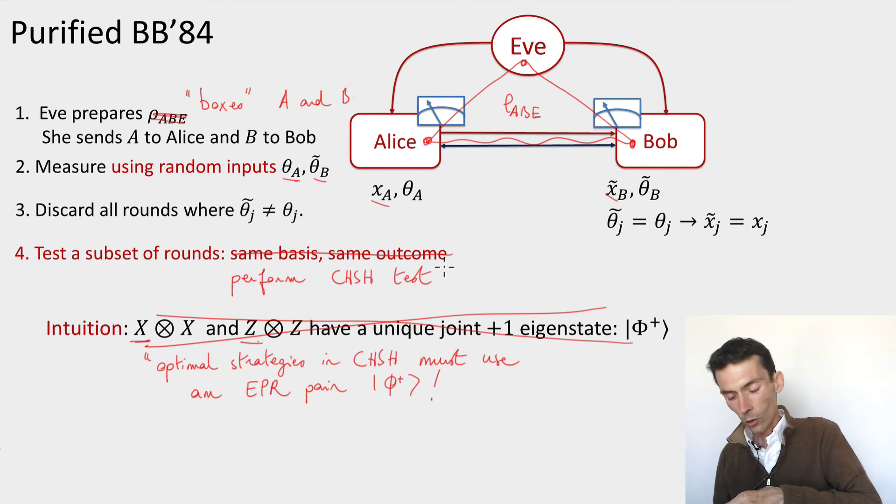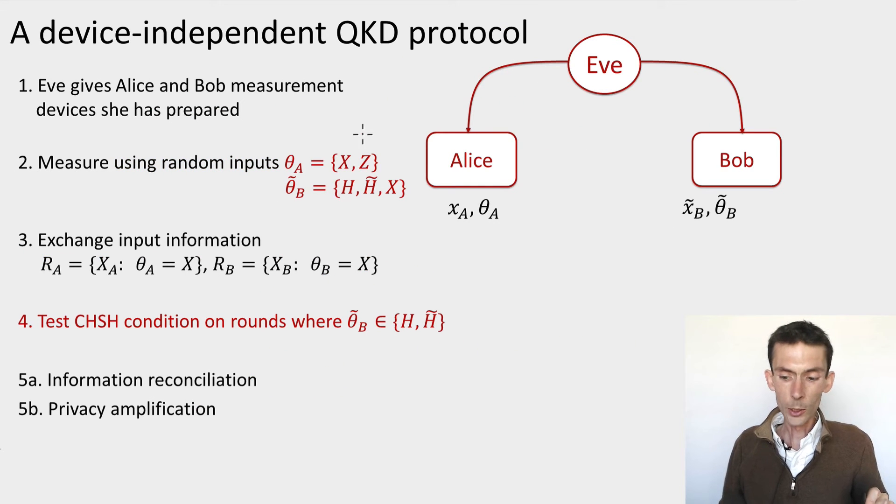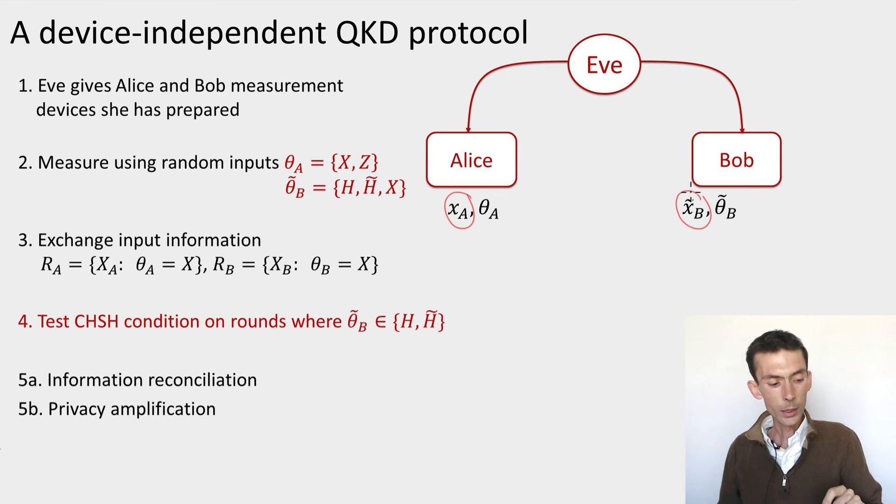Here's going to be our device-independent protocol. First of all, Eve gives Alice and Bob arbitrary devices that she has prepared, A and B, and she can be correlated with these devices. Now Alice and Bob are going to provide random inputs to their boxes. Let's call these inputs X and Z for Alice and H, H tilde or X for Bob. So Bob's device is going to take three inputs. So they put these inputs, they don't know what measurement is being performed, but out comes a bit x_A for Alice and a bit x_B for Bob.